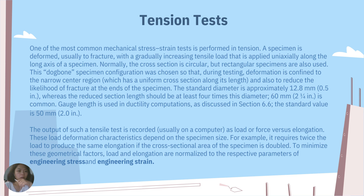For the tension test, one of the most common mechanical stress-strain tests is performed in tension. A specimen is tested usually to fracture with a gradually increasing tensile load applied uniaxially along the long axis of the specimen. Normally the cross-section is circular, but rectangular specimens are also used. This dog-bone specimen configuration was chosen so that during testing, deformation is confined to the narrow center region, which has a uniform cross-section along its length, and also to reduce the likelihood of fracture at the ends of the specimen. The standard diameter is approximately 12.8 mm or 0.5 inches, whereas the reduced section length should be at least four times this diameter.